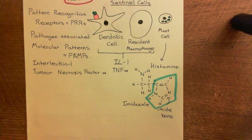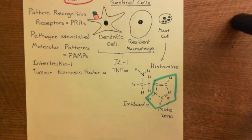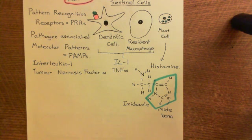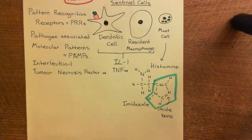All three of these mediators will go to endothelial cells of blood vessels in the local area and cause the acute inflammatory response, which is really all about the endothelial cells. The acute inflammatory response is about bringing in troops from the blood into the interstitial fluid. What's stopping things from coming out of the blood is the endothelial cells — they control what moves from the blood into the interstitial fluid.